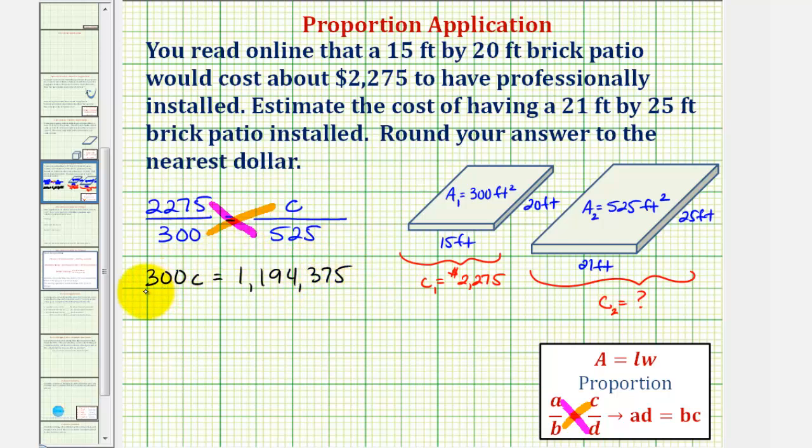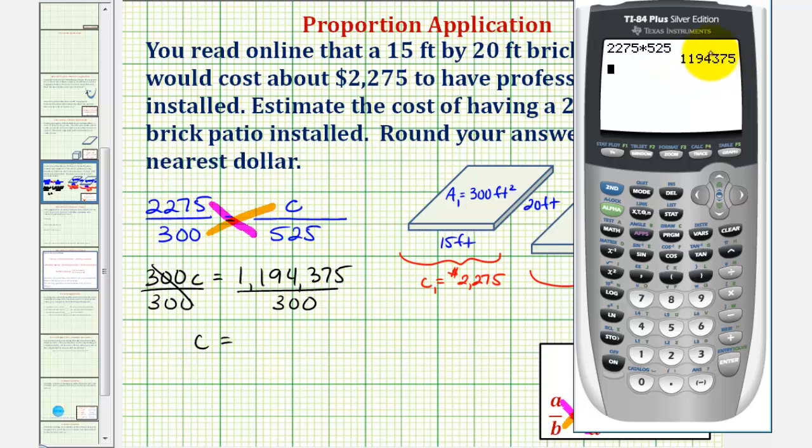Now to solve for C, we would divide both sides by 300, so we'll take the previous result and divide by 300, giving us a cost of $3,981.25.